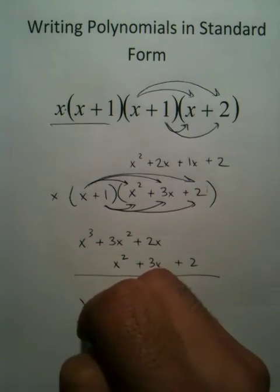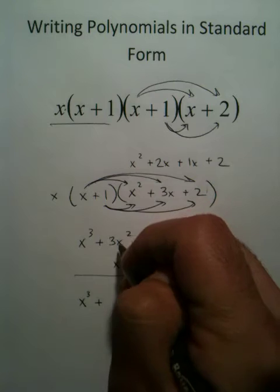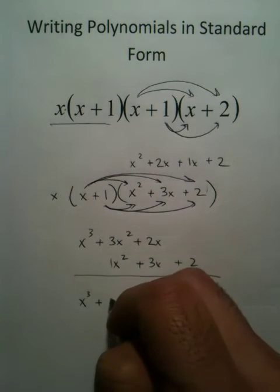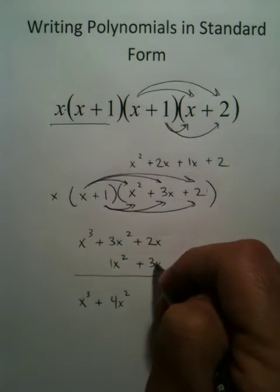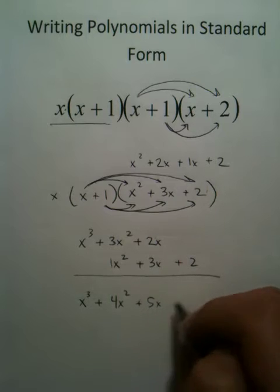Now, I'll be able to combine all my terms very easily. 3 plus 1 is 4x squared, 3 plus 2 is 5, and 2.